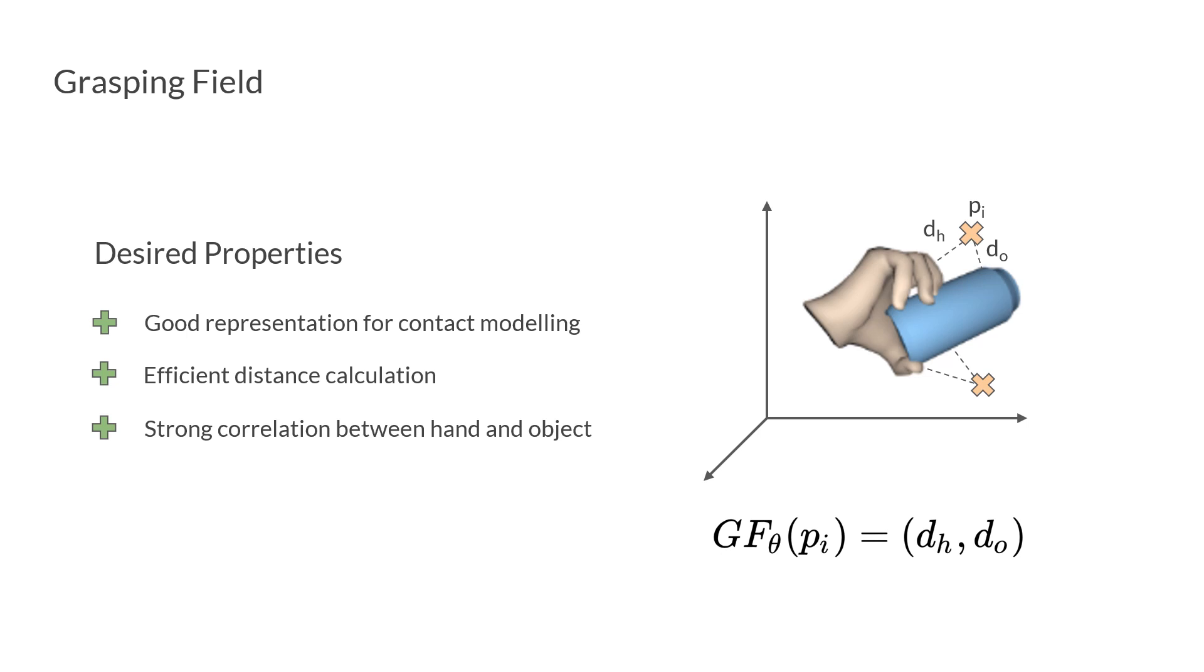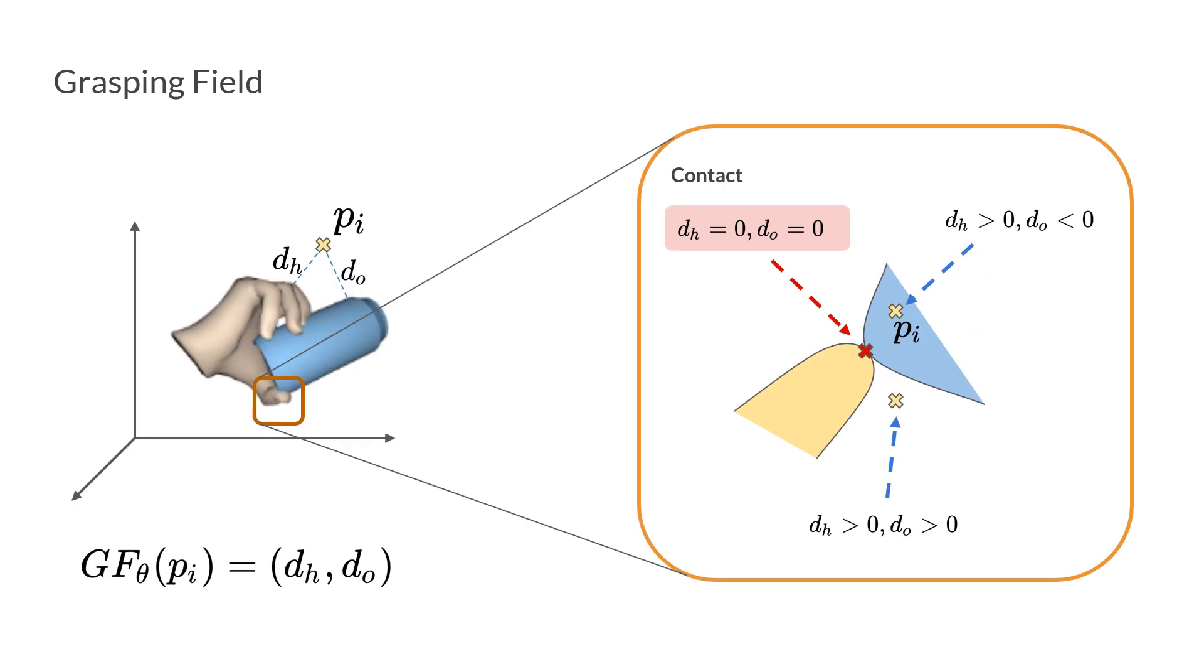The grasping field representation maps 3D points to a 2D space, where each dimension indicates the sign distances to the surface of the hand and the object respectively. With this representation, the contact region can be explicitly defined as regions where the distances to both surfaces are zero.